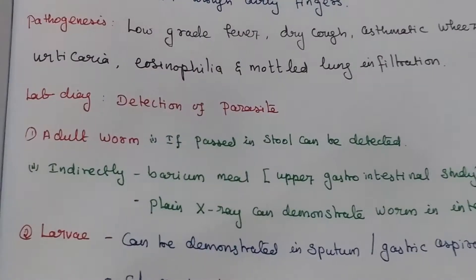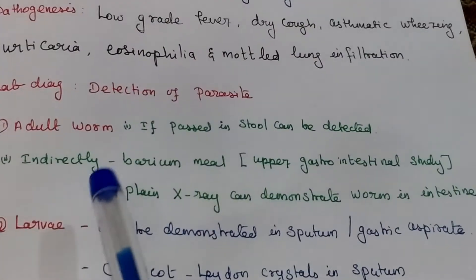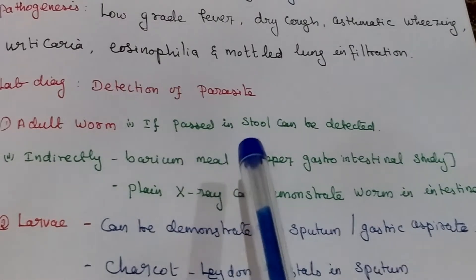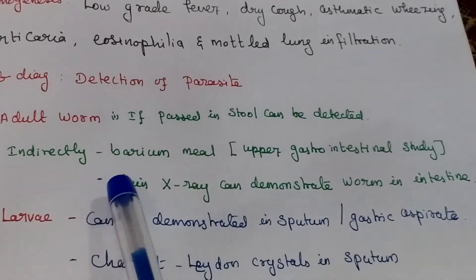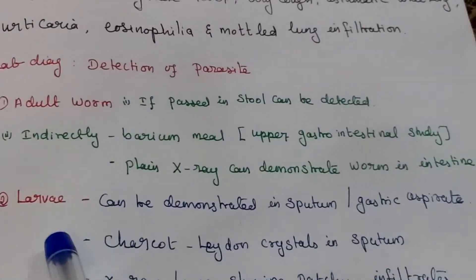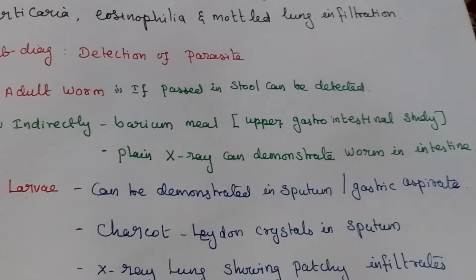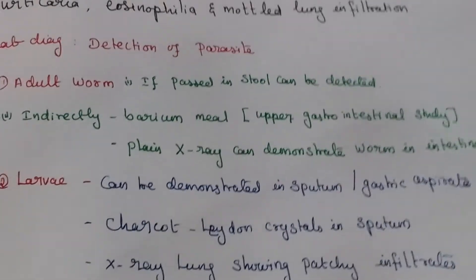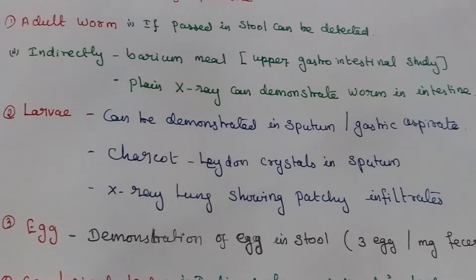Laboratory diagnosis: detection of parasite. First one, adult worm if passed in stool can be detected. We collect stool samples. Indirect method: barium meal, then plain x-ray can be used. Larvae can be detected in sputum or gastric aspirate. Then Charcot-Leyden crystals in sputum. X-ray technique.